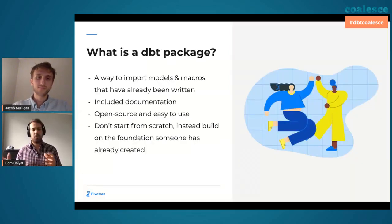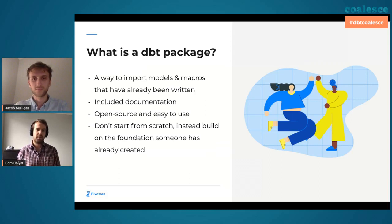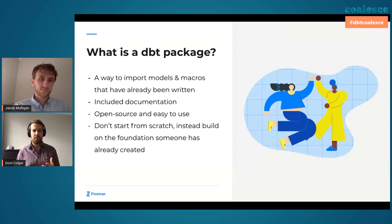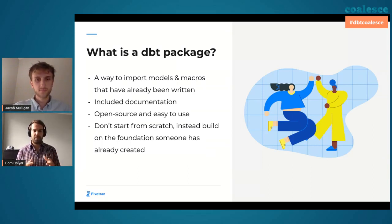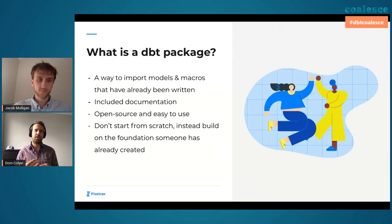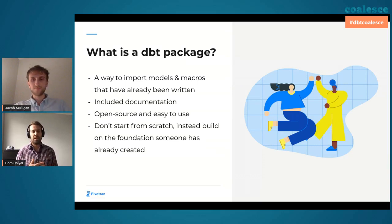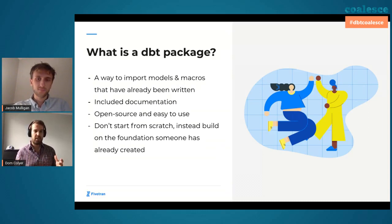We've done a partnership with Fishtown Analytics and DBT, and this talk is mainly focused around DBT packages. So what is a package? They're a way to import models and macros that have already been written and are open source into your projects. They're a very collaborative way to model your data and quick-start some engineering processes. They're super easy to install — about three steps. You create a packages.yaml file in your own project, define any dependencies of the package you've chosen into that file, then run the dbt deps command. That puts the package in your project, ready to use, interact with, and customize.